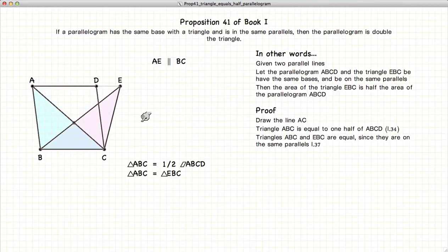Now, if you remember from Proposition 37, if we have two triangles lying on the same parallels, AE being the parallel, BC being the parallel, having a common base, then the two triangles are equal in area.